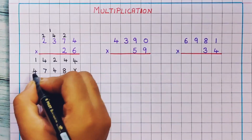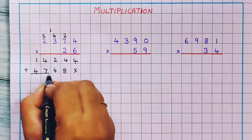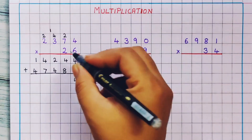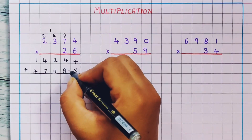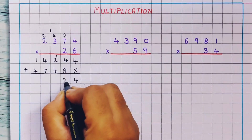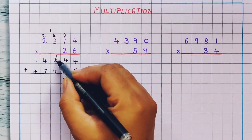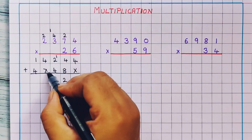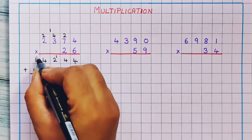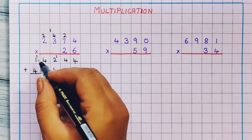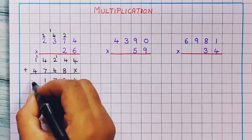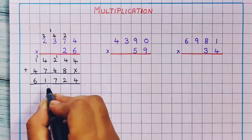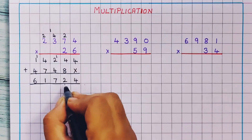Now I will do the addition of these 2 numbers. 4 plus nothing is 4. Then 4 plus 8 is 12, so I will put 1, 2. Now 1 plus 2 plus 4 is 7. Then 4 plus 7 is 11, so I will put 1 here and 1 here. Then 2 plus 4 is 6. So the answer is 61,724.